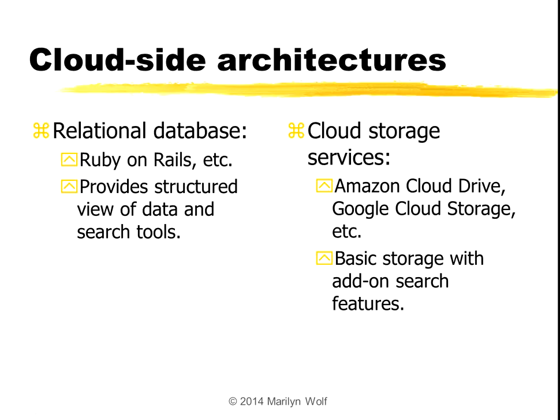There are two ways to think about the cloud side architecture. One is a traditional relational database, and we can build this kind of application using systems like Ruby on Rails or other database-building systems of your choice. A relational database has a structured view of data and provides some very powerful tools that allow us to search on that data. On the other hand, there are cloud storage services from a variety of providers, and the basic storage services use what we call flat data — they don't have any particular structure, but you can put search features on top of this data.